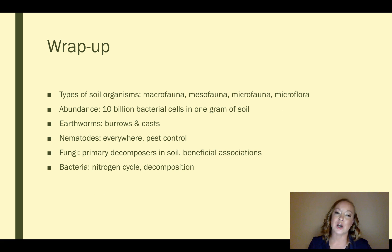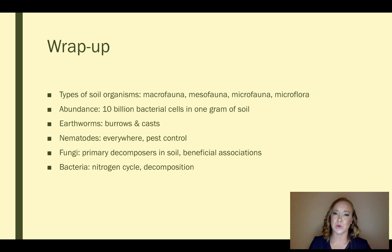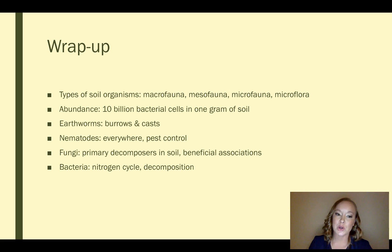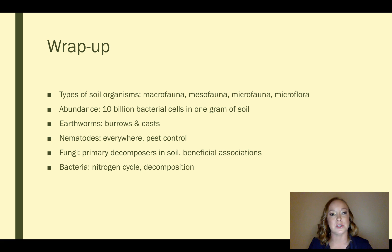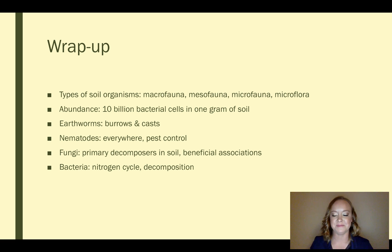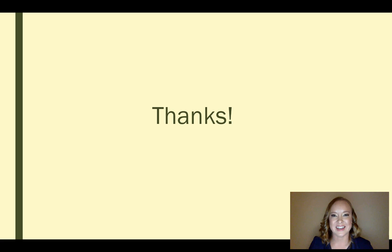To wrap this up, we talked about different types of soil organisms — macro, meso, and microfauna, and also microflora. We talked about the abundance of soil organisms in the soil system, including 10 billion bacterial cells in one gram of soil. We also discussed earthworms and the benefits of their burrows and casts throughout the soil profile. Then we talked about nematodes, their persistence almost everywhere, and their involvement in pest control. We talked about fungi as the primary decomposers in soil and some of the beneficial associations they can make with plants. And we followed that up with bacteria and how they're involved in all aspects of the nitrogen cycle and also in decomposition. Thank you for listening — I hope you enjoyed it.